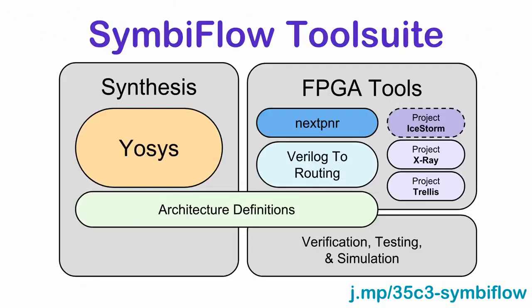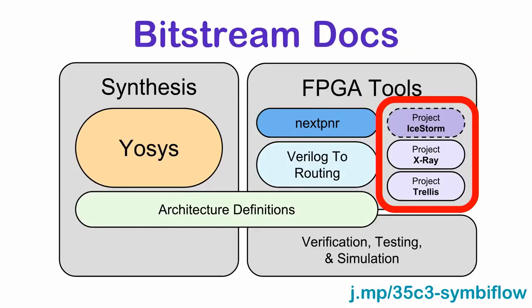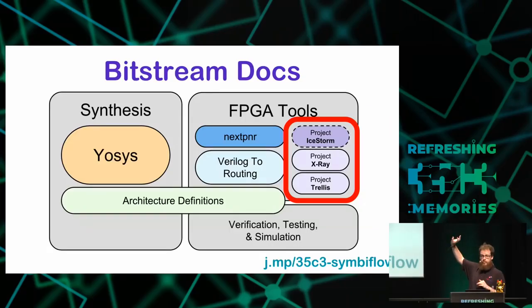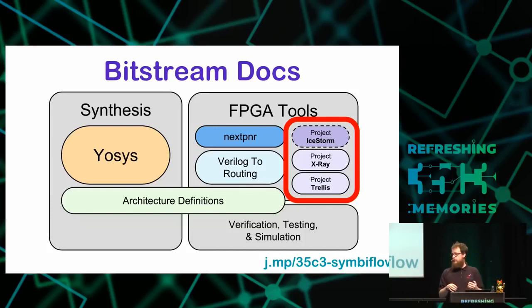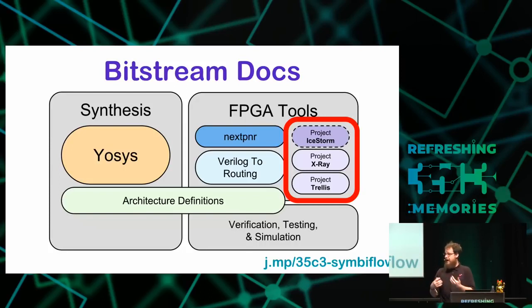Going into more detail: the first thing you need to create this toolchain is documentation for the bitstream that goes on the FPGA. Sadly, FPGA vendors don't provide this documentation for some interesting reasons, most of which don't make a lot of sense. This is where Project iCEstorm, Project X-Ray, and Project Trellis fit in — they're trying to create documentation that anybody can use to create new tools. We consider them part of the SymbiFlow project, but other people can take the documentation and target these FPGAs without asking us.